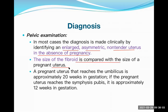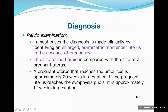The size of the fibroid is compared to the size of the pregnant uterus. For example, if the pregnant uterus at 20 weeks reaches the umbilical level, and at 12 weeks reaches the symphysis pubis level, we use similar landmarks to describe fibroid size — saying 'the uterus is 12 weeks in size' means the fibroid enlargement is that big.